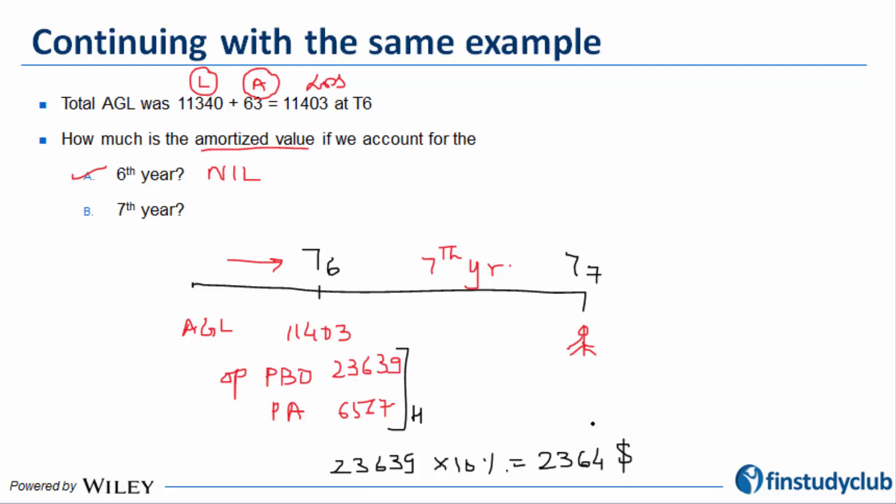I select the higher of the two, 23,639. I take 10% of that, which is 2,363.9, or let me round it off to 2,364. This becomes my materiality limit. By materiality limit, what I mean is I'm going to create a tumbler called OCI, and I'm going to mark the size of this tumbler equal to this materiality limit. This tumbler is applicable only for the seventh year. The size of the tumbler is going to change because every year the opening values are going to be different, so this is a relative calculation.